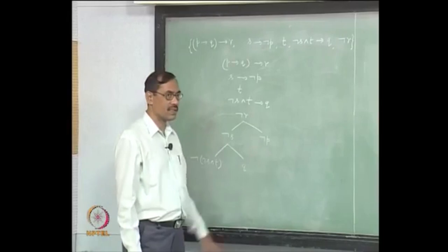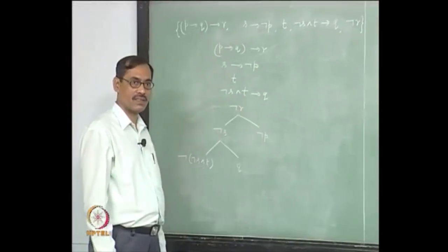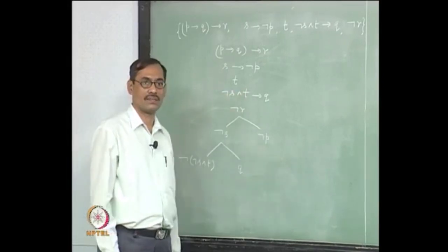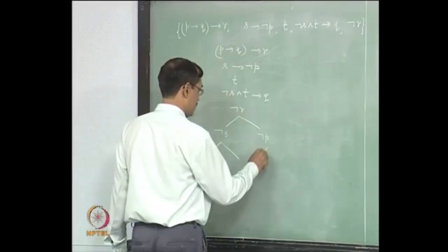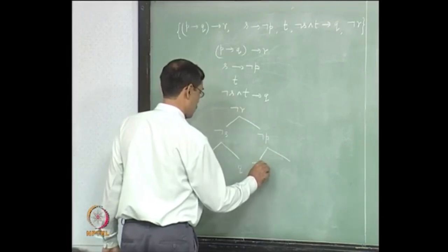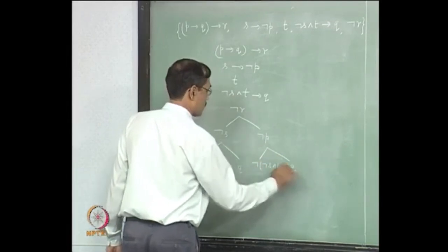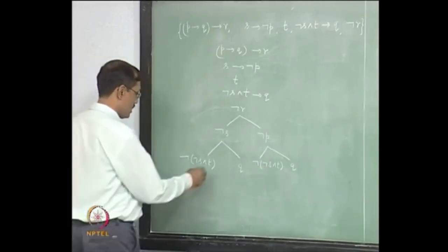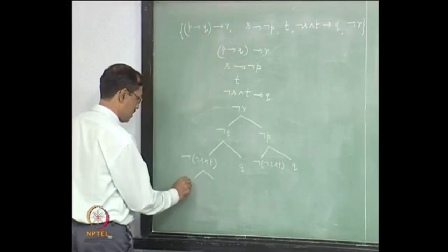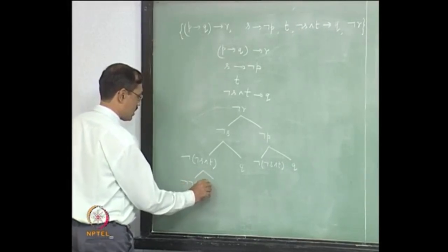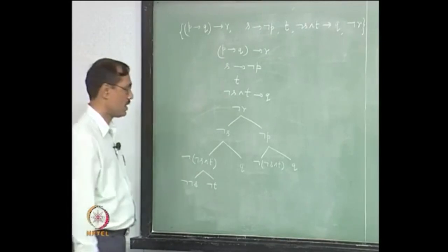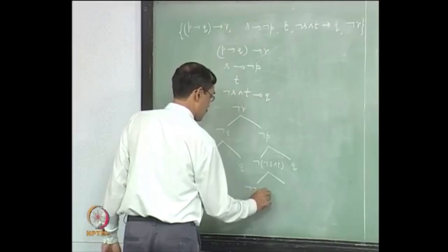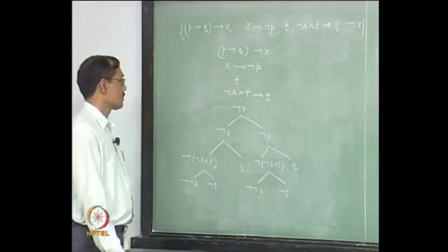If you wanted to expand it breadth first, then once you are using it, you have to add here as well. This one gives two branches: 'not s' and 'not t'. Same way, this path closes.